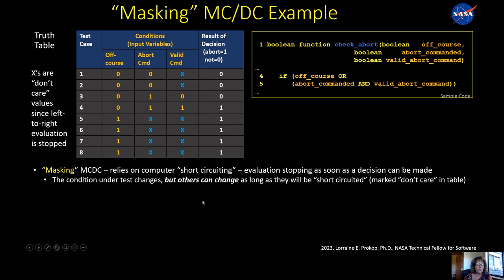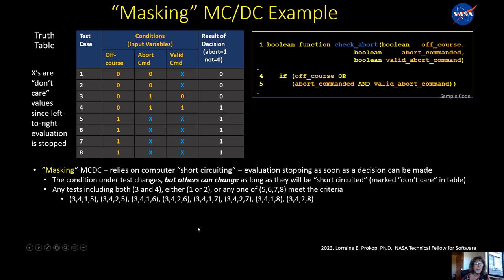So masking form of MCDC, what it really does is it relies on this concept of short circuiting to stop evaluation as soon as the decision is made. And in this form, it differs a little bit because the condition under the test changes. But unlike the previous form, the other values, the other conditions with don't care, they can change as long as they're marked as don't care variables. So it actually allows a little more flexibility and any combination of these will fulfill the MCDC requirement.